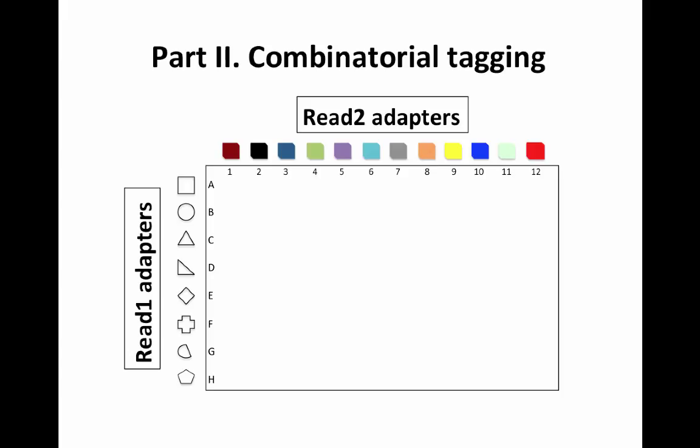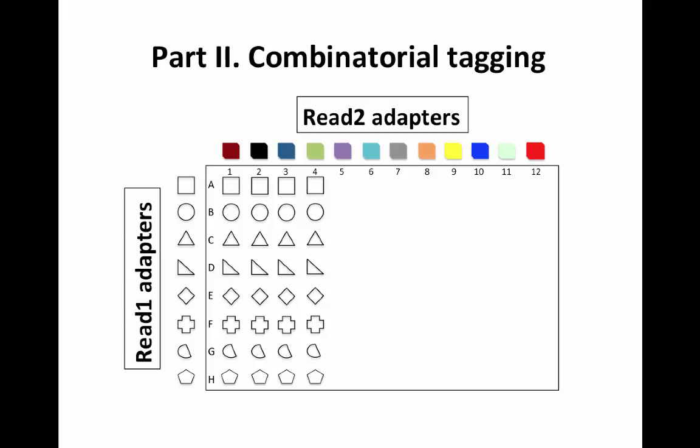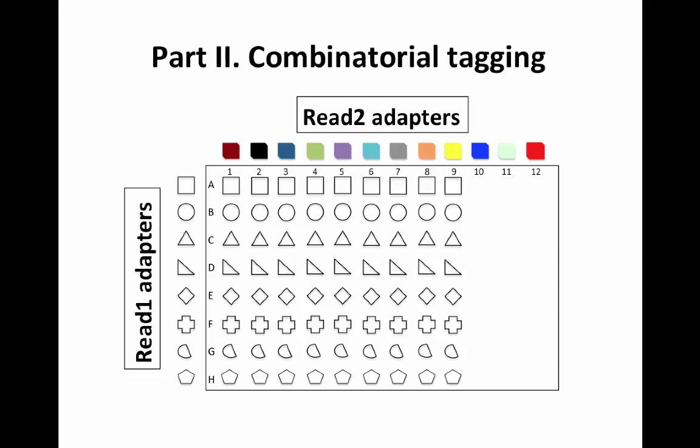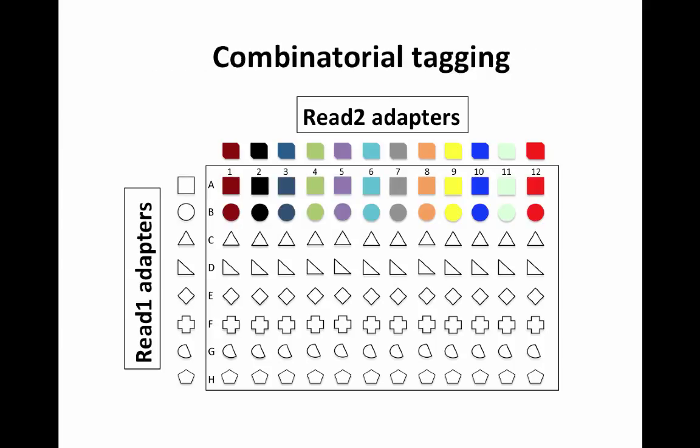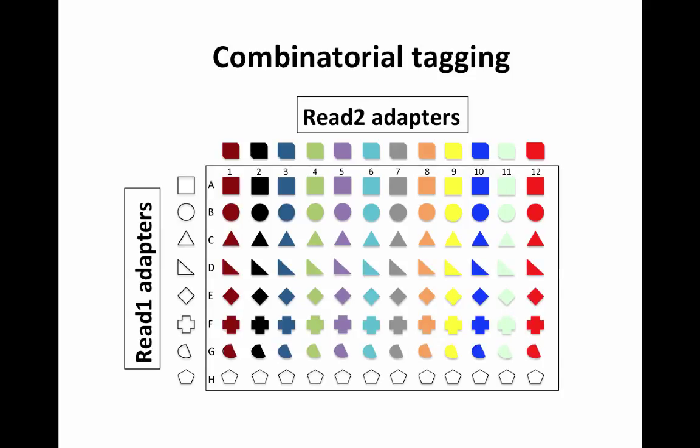Typically we have the READ1 and READ2 adapters in strip tubes that are stored in a strip tube plate. After we have everything in place and prior to pipetting into the 96-well plate, be sure to mix the READ1 adapters well in the strip tube by pipetting up and down multiple times. Then we use a multi-channel pipette to pipette READ1 adapters to each well of the 96-well plate. This requires pipetting twelve times. Now we are ready to repeat that process for the READ2 adapters. Use a 12-channel pipette to pipette the READ2 adapters into each well. Now we have unique combinations of READ1 and READ2 adapters in each well.